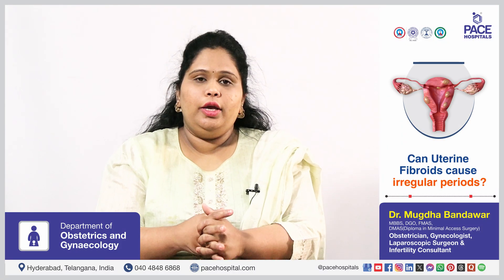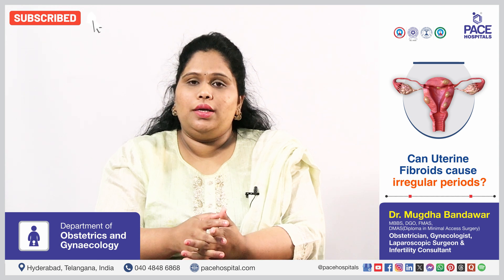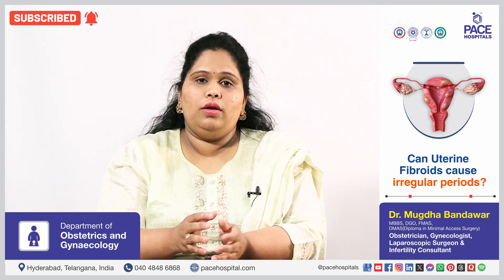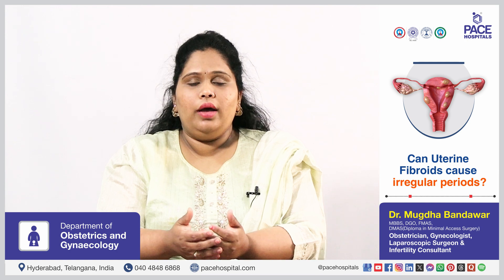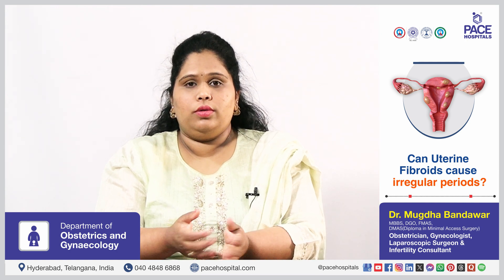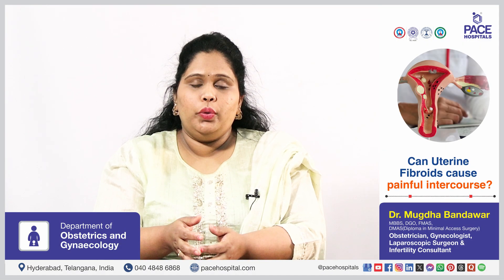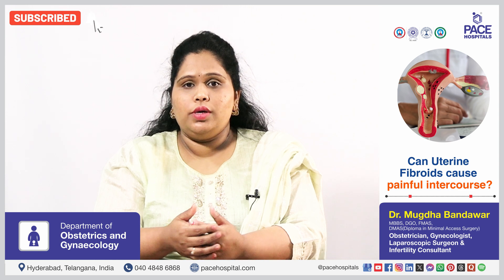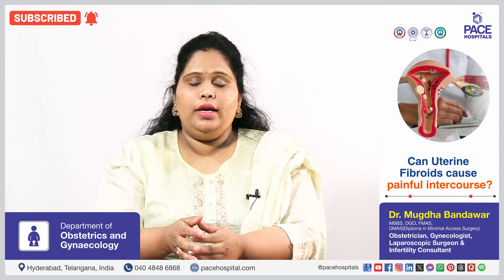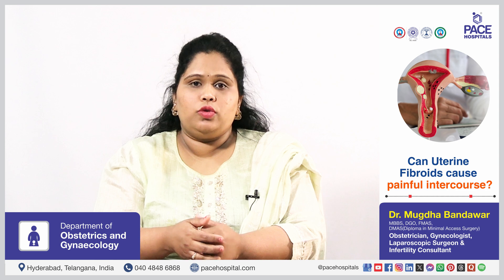Yes, uterine fibroids can cause irregular periods because of hormonal imbalance — they can cause multiple periods, increased bleeding, or even amenorrhea, which is no periods at all. Dyspareunia, that is painful intercourse, is also one of the symptoms for which patients come to us, and uterine fibroids can definitely lead to dyspareunia.